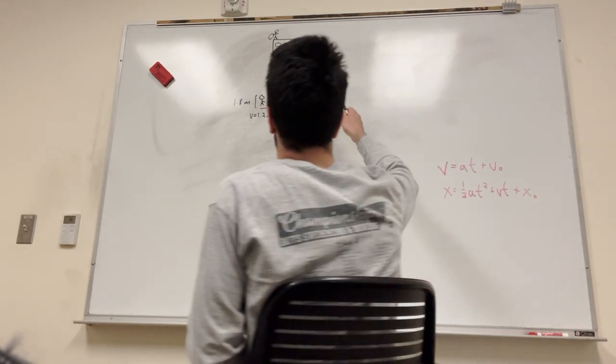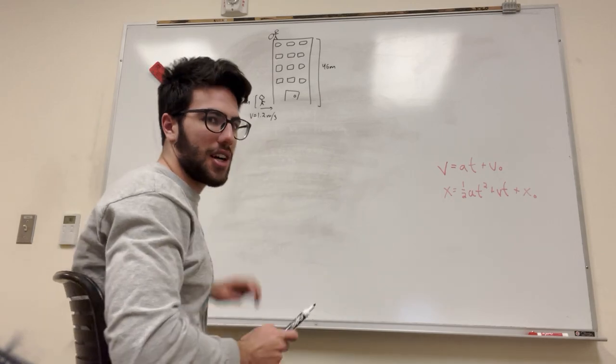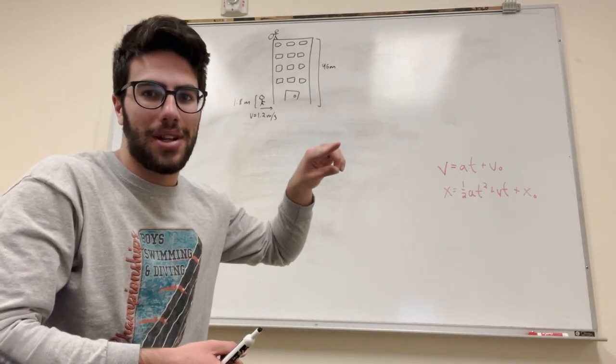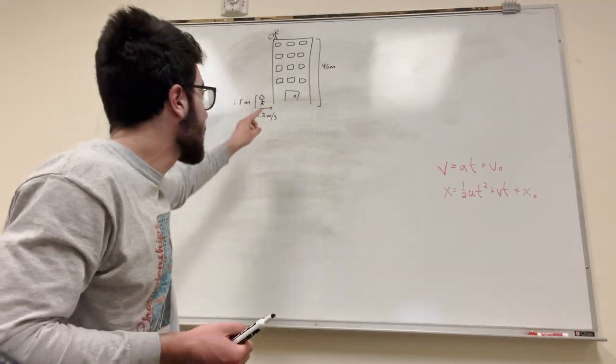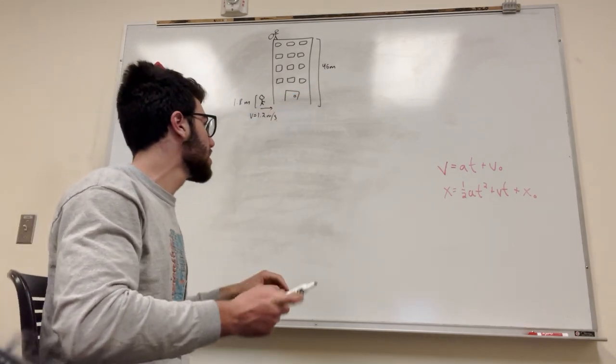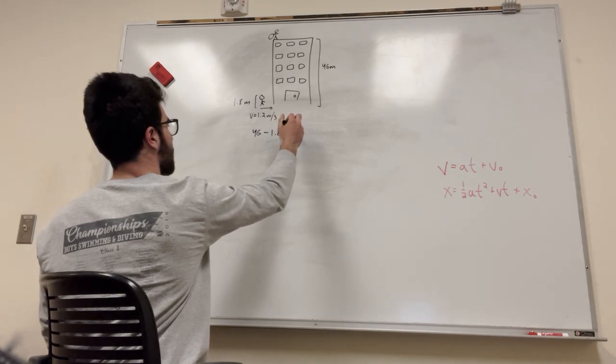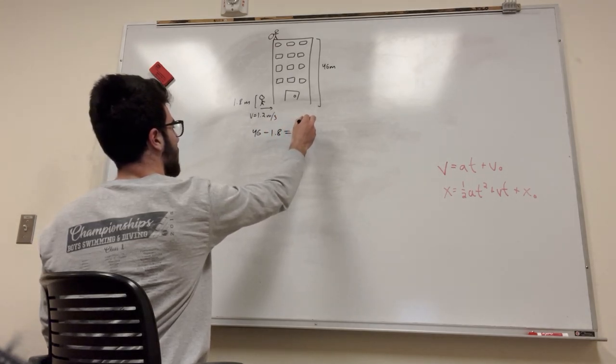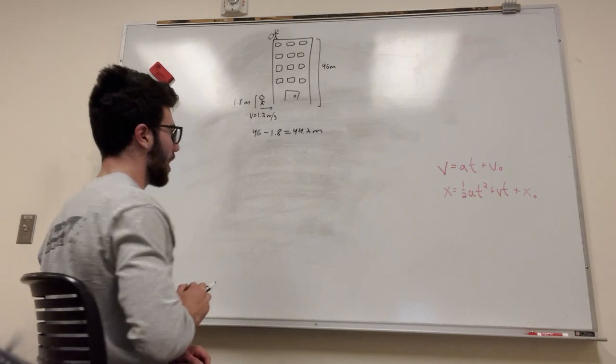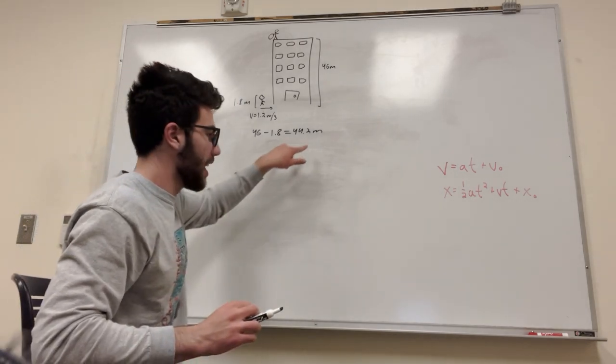We know that this building is 46 meters tall, but we also know that he is 1.8 meters tall. So, to find the distance from the top of the building to his head, we need to subtract this number from this number. 46 minus 1.8 is equal to, if I get this wrong, it's embarrassing, 44.2 meters, right? Yes. That's how far the egg's going to fall.